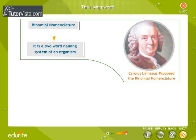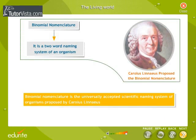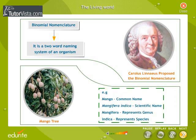Binomial Nomenclature is the universally accepted scientific naming system of organisms, proposed by Carolus Linnaeus. In this two-word naming system,